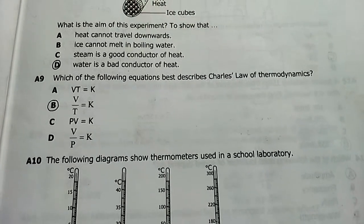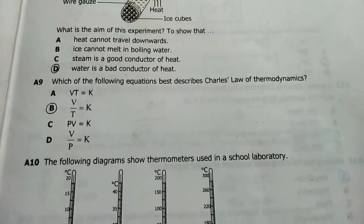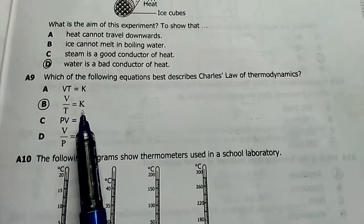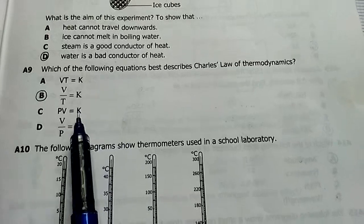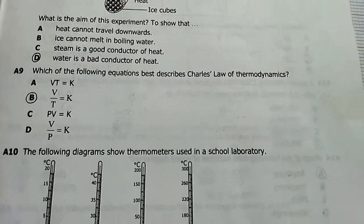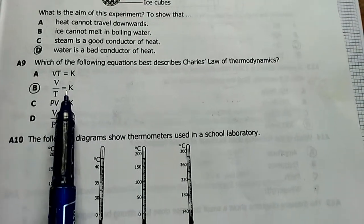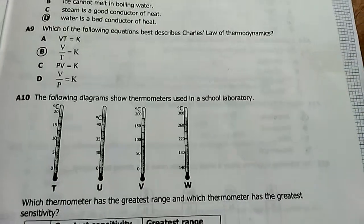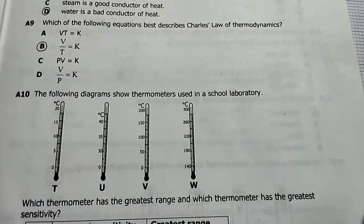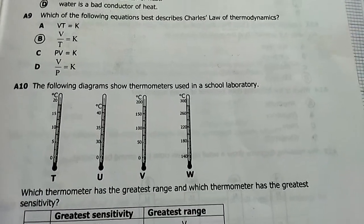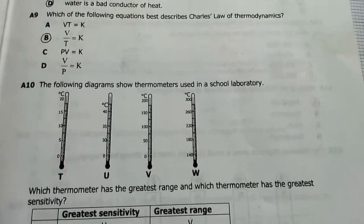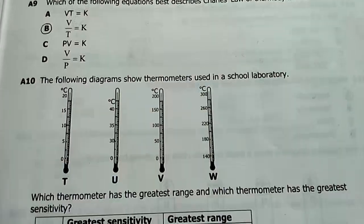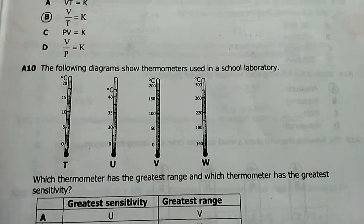Question A9: which equation best describes Charles' Law? The answer is V/T = k. Volume divided by temperature equals a constant. This means volume and temperature are directly proportional: if you increase temperature, the gas expands and volume increases; if you reduce temperature, volume decreases. Boyle's Law, by contrast, is inversely proportional. You can check Avogadro's Law and Gay-Lussac's Law in your notes as well.